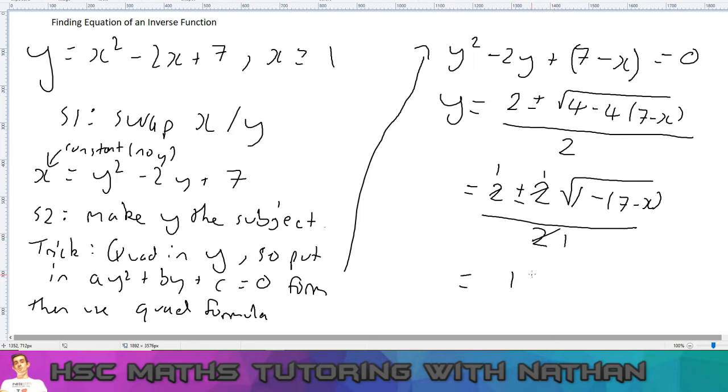So it becomes 1 plus or minus, I don't need to write 1 here. And if I expand this bracket, it's 1 minus 7, and there's a double negative here so it becomes x minus 6.